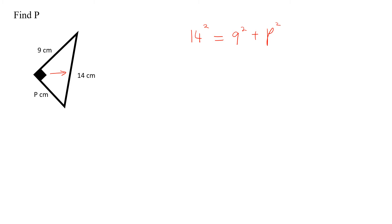Whatever p is, it should be less than 14 centimeters, because that's what the theorem and the triangle state — the hypotenuse is always the longest side.